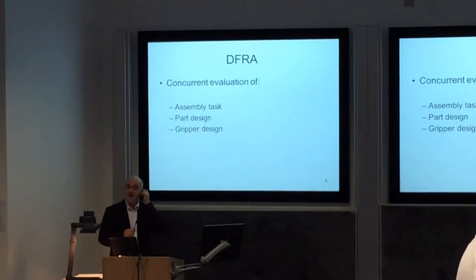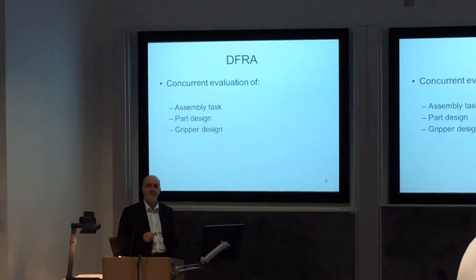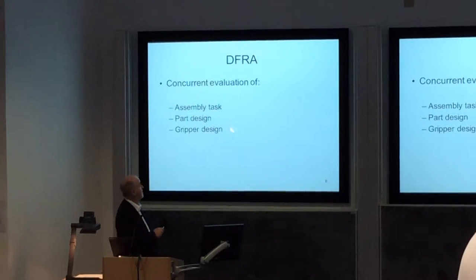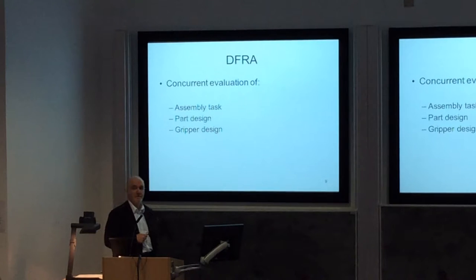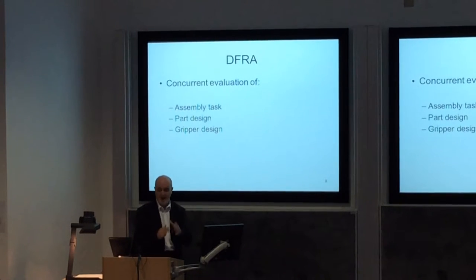However, let's imagine we're going for a robotic assembly. There are a number of additional things we've got to think about. Obviously we've got to think about the assembly task, but we've also got to think about the part design and its relation with the gripper design — how do these things interact?